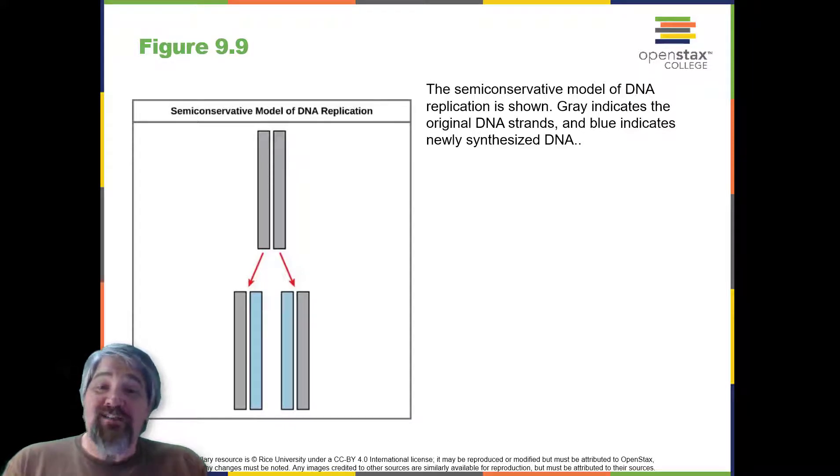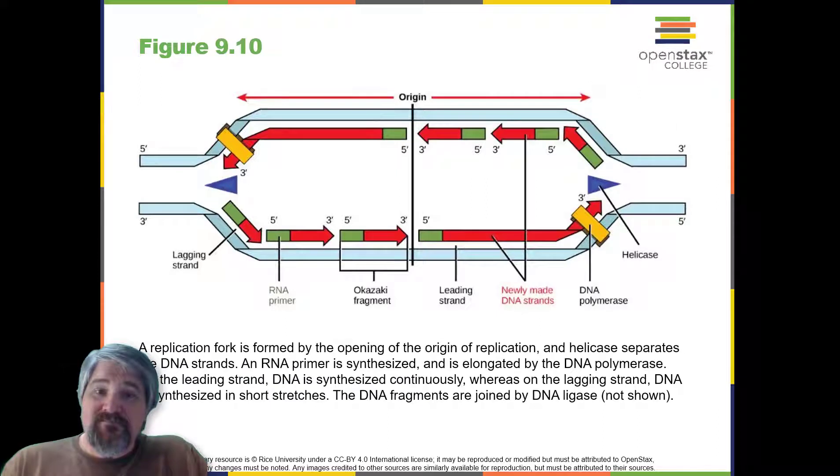Recall that eukaryotic DNA is bound to proteins known as histones to form structures called nucleosomes. During initiation, the DNA is made accessible to the proteins and enzymes involved in the replication process. How does the replication machinery know where on the DNA double helix to begin? It turns out there are specific nucleotide sequences called origins of replication at which replication begins. Certain proteins bind the origin of replication, while an enzyme called helicase unwinds and opens up the DNA helix. As the DNA opens up, Y-shaped structures called replication forks are formed. Overall, this is the replication bubble. Each end has a replication fork.